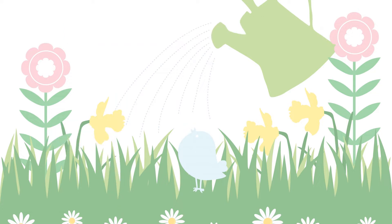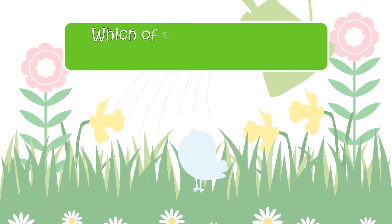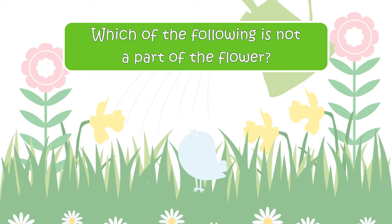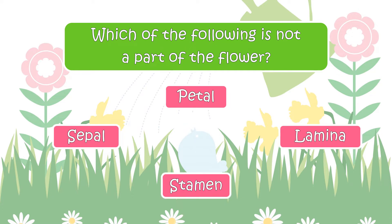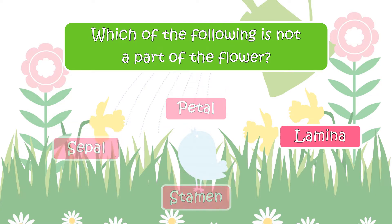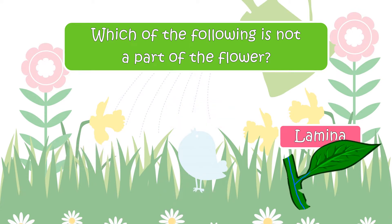The next question is: Which of the following is not a part of the flower? Your options are Seed, Petal, Lamina, or Stamen. The answer is Lamina. Lamina is a part of a leaf.